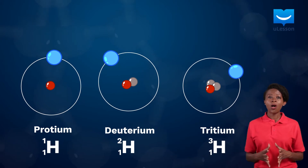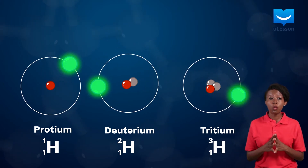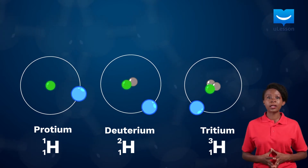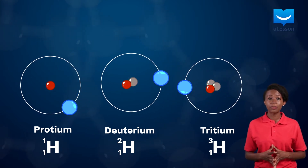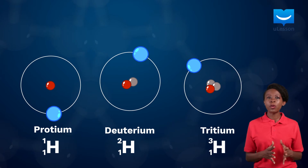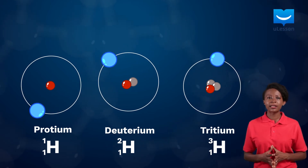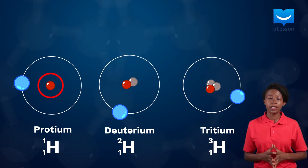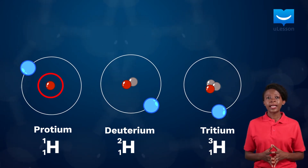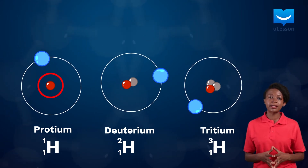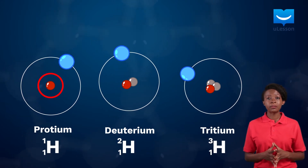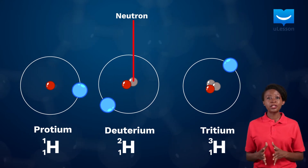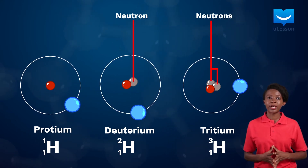As seen here, all the hydrogen isotopes have one electron in their shells. They also have one proton in their respective nuclei. Protium is the only hydrogen isotope without a neutron in its nucleus — it only has a proton in its nucleus, which is why it is called protium. Deuterium and tritium, on the other hand, have one and two neutrons in their nuclei respectively.